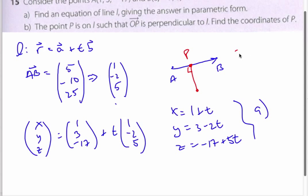And P, OP, is going to be the vector 1 plus T, 3 minus 2T, minus 17 plus 5T. Now, that's the hard part, to recognize that this can be any point on this line AB here.